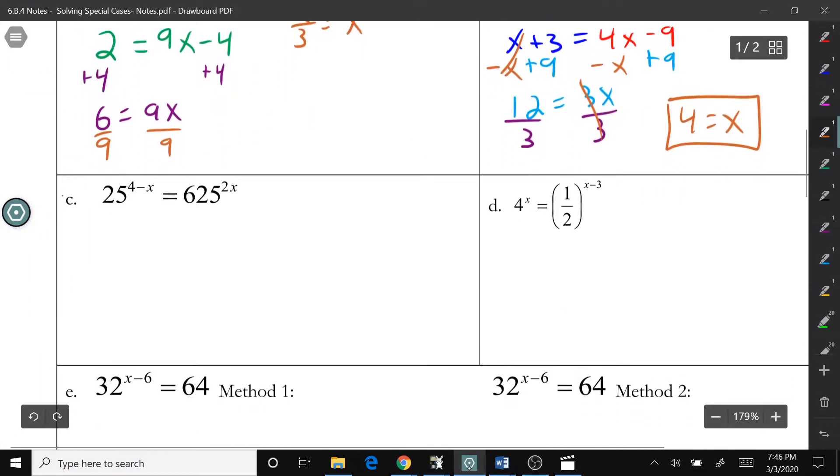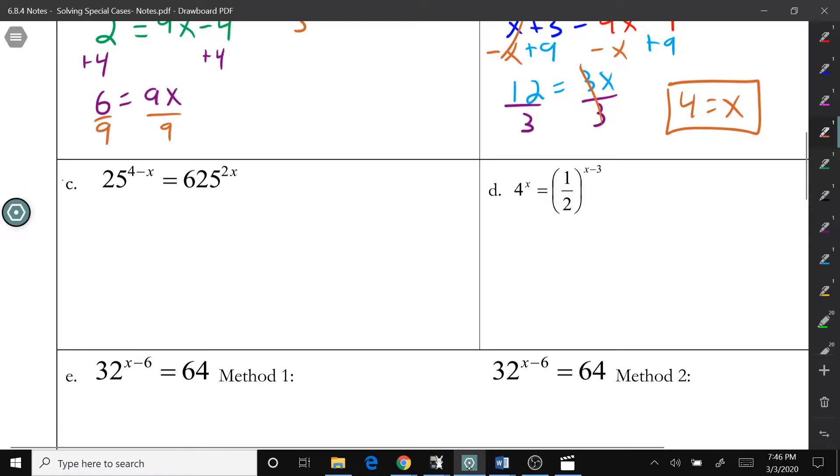Now, in letter C, you'll notice that your bases are not the same, so you can't just say 4 minus x equals 2x. However, what you can do is say, well I know 5 squared is 25, so you can rewrite this. So that's 5 squared to the 4 minus x power equals 5 to the 3rd power is 625. So you can write this as 5 to the 3rd to the 2x power.